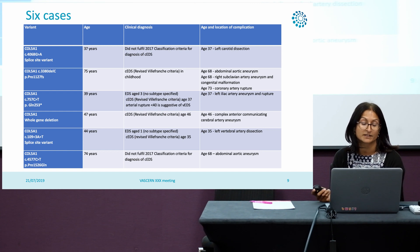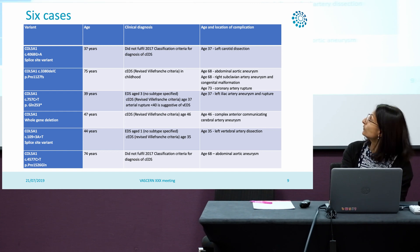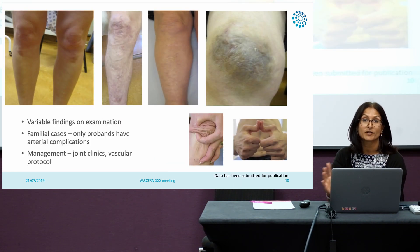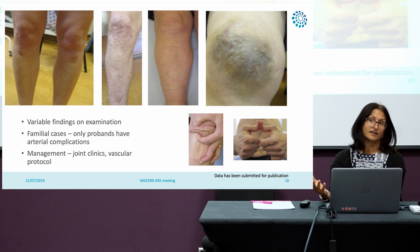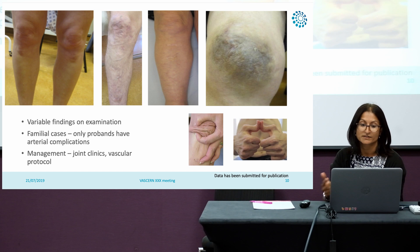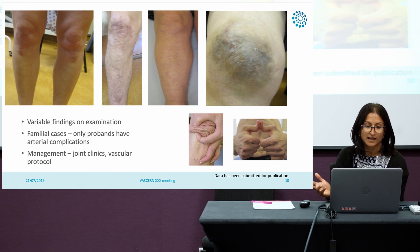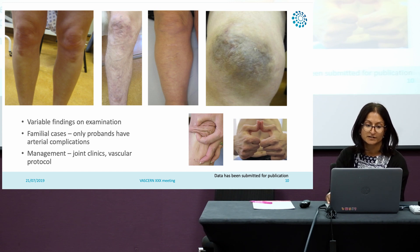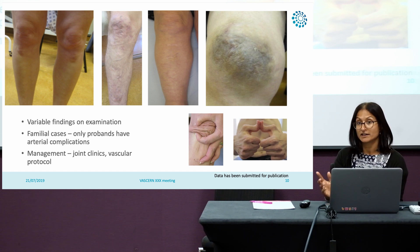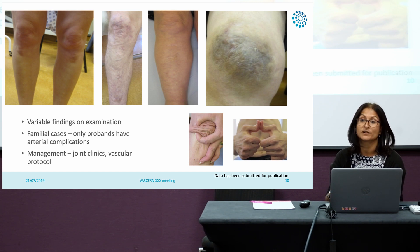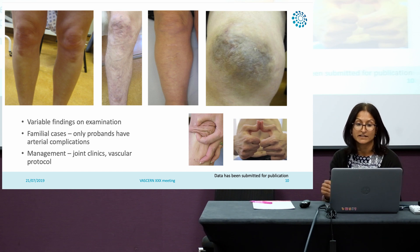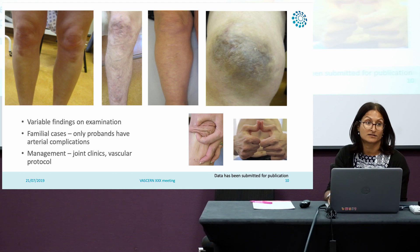The type of complications is again varied, involving medium-sized vessels, but there are two abdominal aortic aneurysms. Interestingly, not all patients fulfil the clinical criteria for classical EDS — they're quite variable in their phenotype. This may reflect an autosomal dominant disorder with incomplete penetrance and variable intrafamilial expressivity. Within this cohort, a few are familial cases, and only the probands have arterial complications. We follow these patients up jointly with the vascular EDS clinic at St. Bart's Hospital, managing them similarly given their arterial complications.